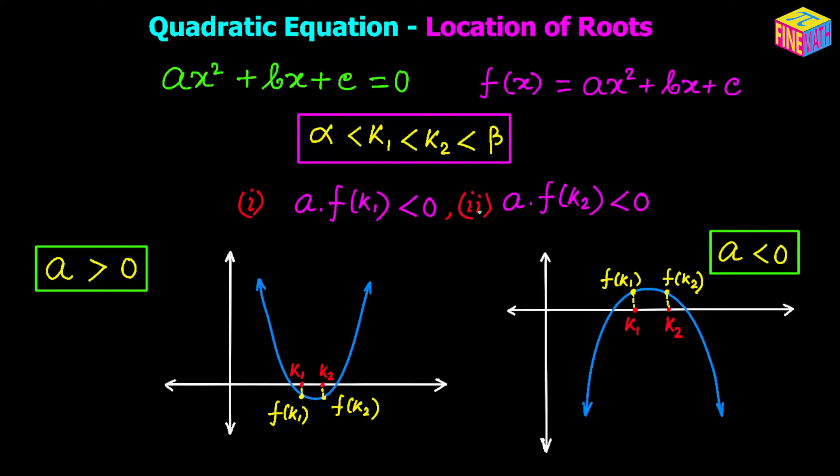In this case we don't need to worry about the discriminant, because if the product a·f(k) is negative, that means k1 or k2 is inside the parabola — and that is only possible when the parabola cuts the x-axis. If the parabola merely touches or goes above the x-axis, the product can never be negative. So just these two conditions guarantee that the quadratic equation has two real roots and that k1 and k2 lie between those two real roots.